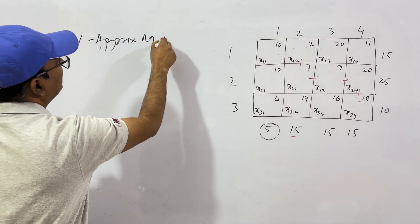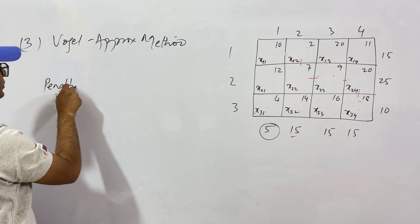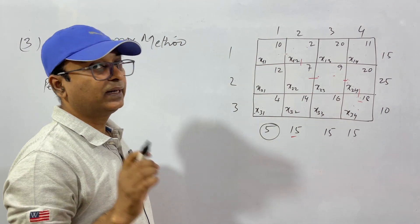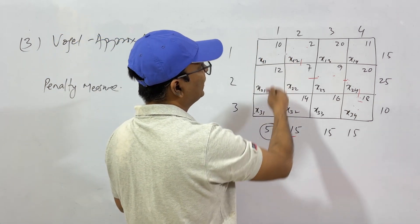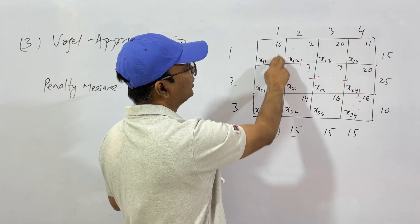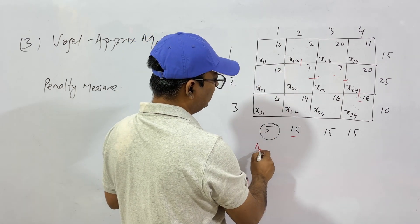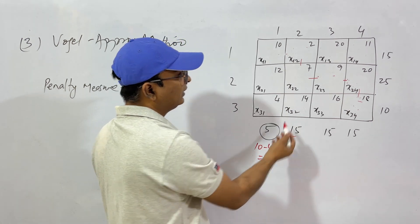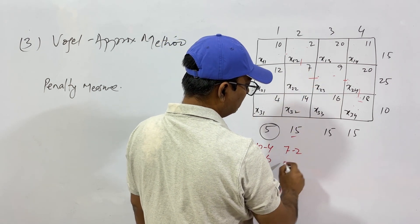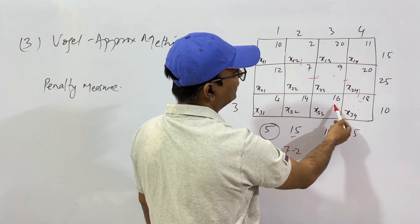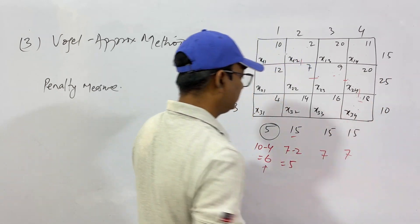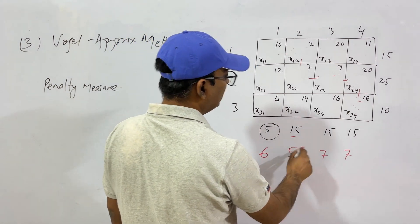In the Vogel approximation method, we find a penalty measure for every row and every column. For each column, find the lowest cost per unit and the next lowest, then subtract: for column 1, costs are 10, 12, 4 — lowest is 4, next is 10, penalty = 6. Column 2: lowest 2, next 7, penalty = 5. Column 3: 9 and 16, penalty = 7. Column 4: 11, 18, 20 — penalty = 18 minus 11 = 7.